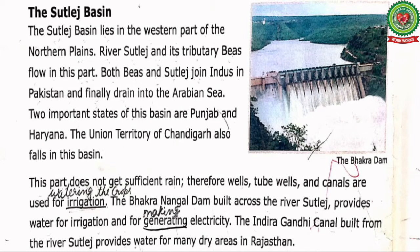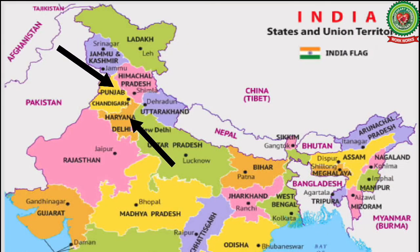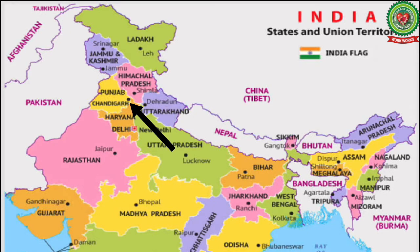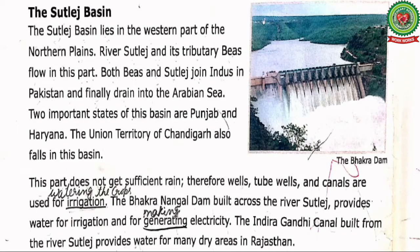Two important states of the Sutlej basin are Punjab and Haryana. The Union Territory of Chandigarh, which is the capital of both Punjab and Haryana, also falls in this basin. This part does not get sufficient rainfall, therefore wells, tube wells, and canals are used for irrigation.